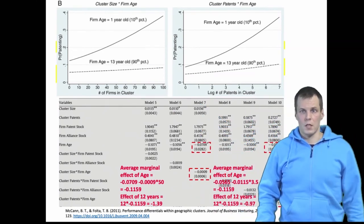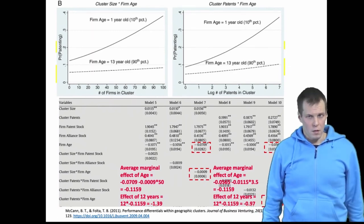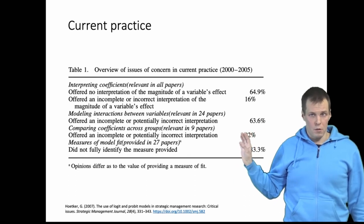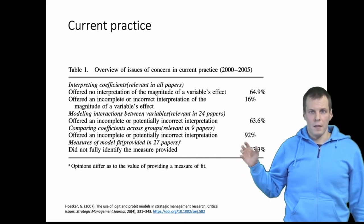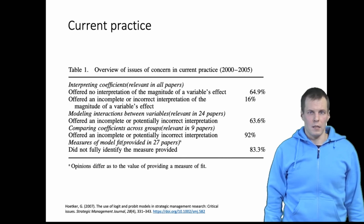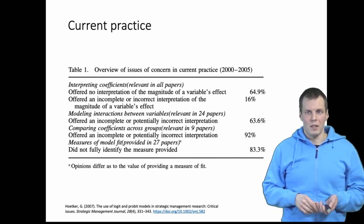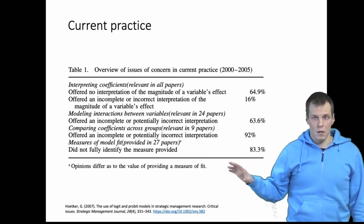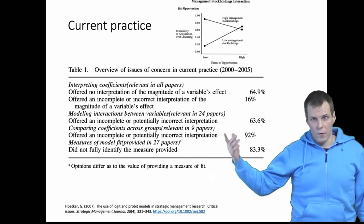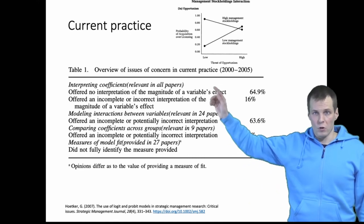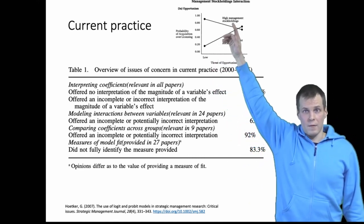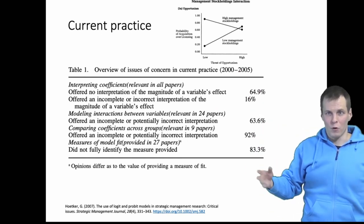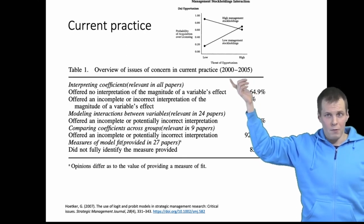What is the current practice in interpreting logistic regression results, or more generally non-linear models? A review article from about ten years ago found that most articles published in management journals ignore interpretation — they just look at the direction of the effect and whether it's statistically significant. Some articles interpret incorrectly, very few interpret correctly, and the best way to interpret is to do plotting. Also, some articles that do plot the effects plot them incorrectly — for example, calculating two predictive values for a low value of a variable and two for a high value and then drawing straight lines, which is incorrect because you're fitting a logistic curve, not a line.